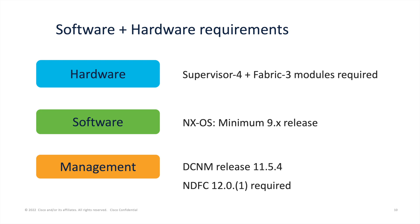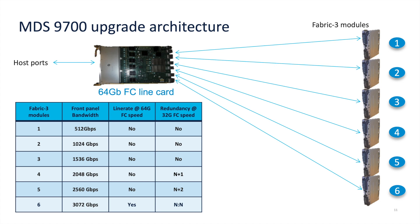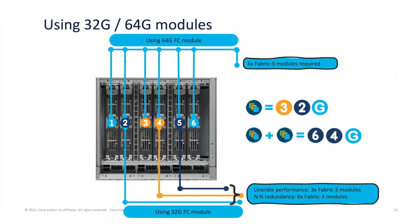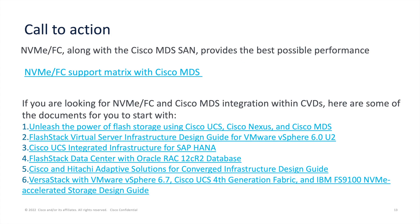For subscription mode, when all 48 ports are loaded with 64GB optics, you get a total of 3Tbps of bandwidth. To achieve 3Tbps, you need all 6 FAB 3 modules loaded. However, if you use 32GB optics, you only need 3 FAB modules. The highlight is that the new 64GB module doesn't always require 6 FAB modules. With 3 FAB modules you can achieve line rate performance, and with 6 FAB modules you can achieve oversubscription.